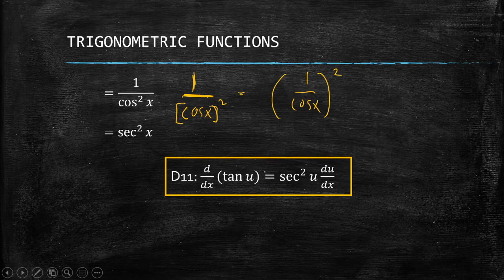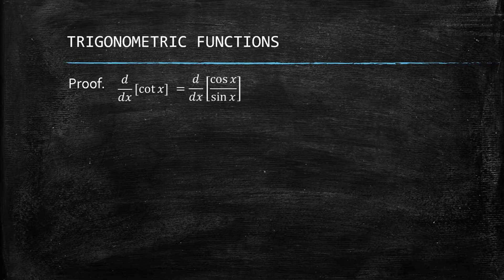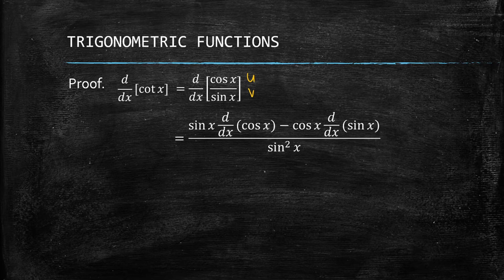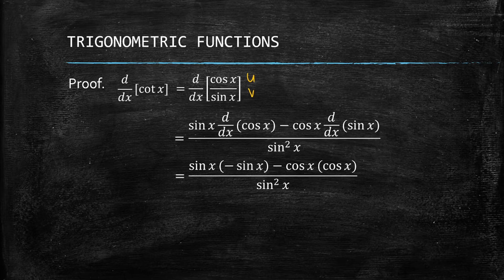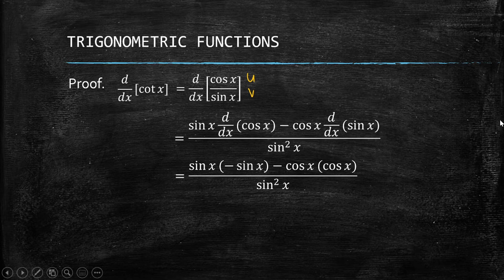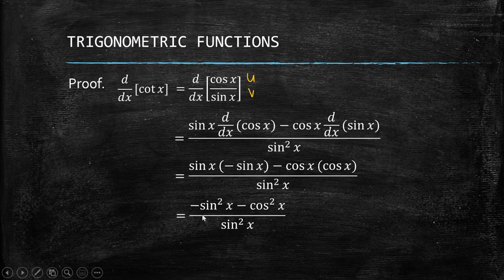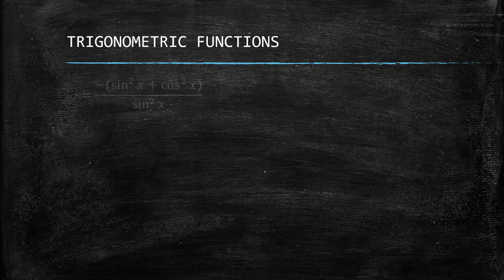Now let's prove the cotangent derivative using the same process. The quotient identity for cotangent is cosine over sine, so we have cosine x over sine x. Applying the quotient rule with v equal to sine x, we get: sine x times the derivative of cosine x, minus cosine x times the derivative of sine x, all over sine squared x. The derivative of cosine x is negative sine x and the derivative of sine x is cosine x. We factor out the negative sign from the numerator.